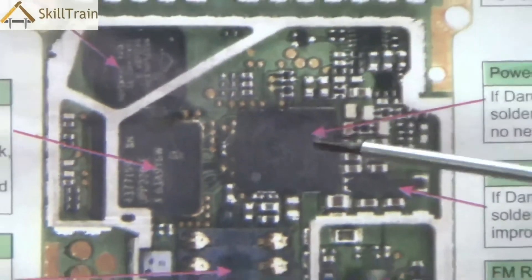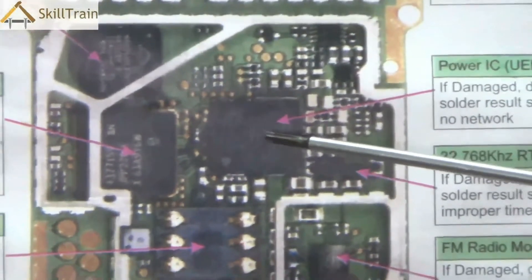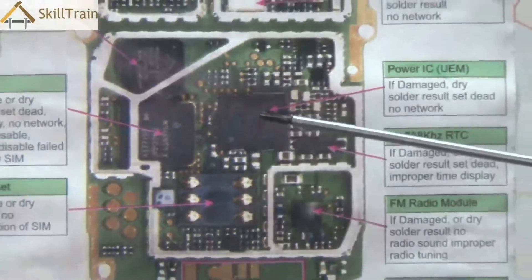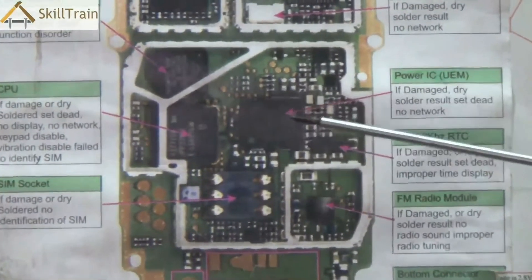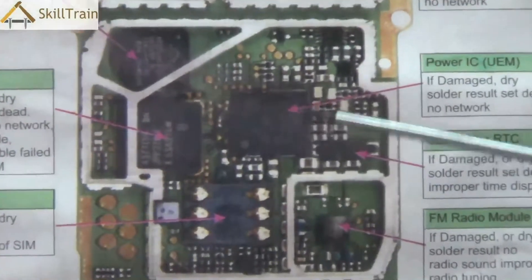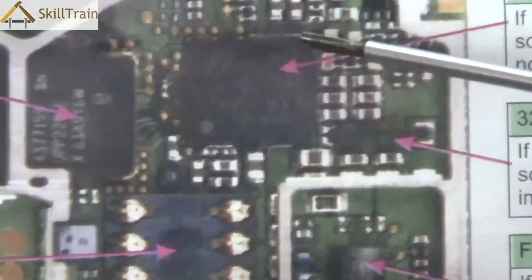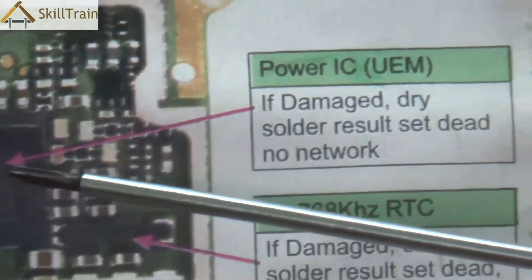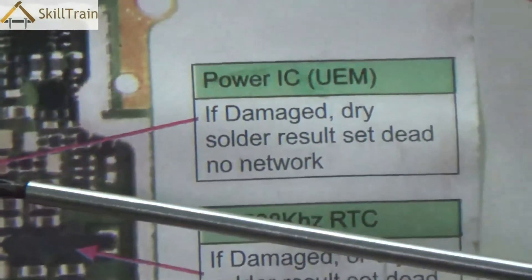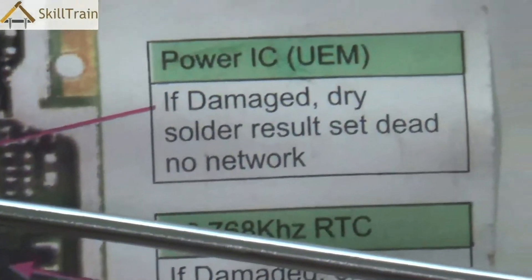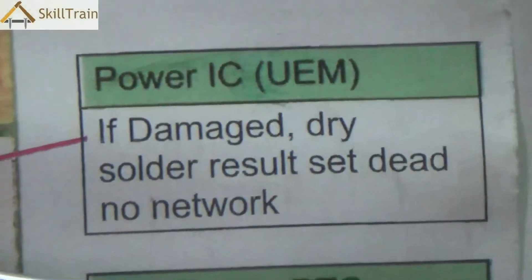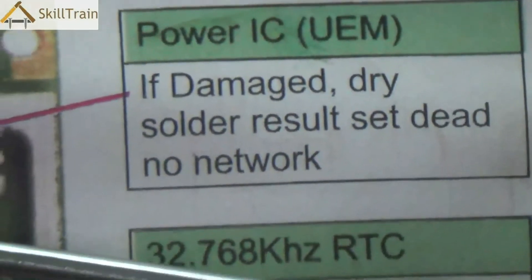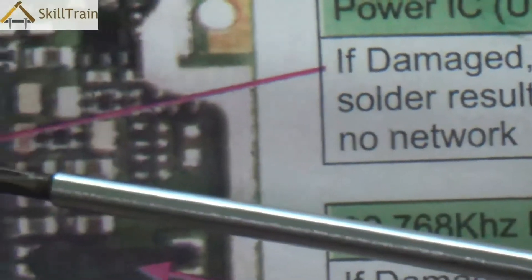Let's now go underneath and understand what the components are here. The first one is called the power IC. The power IC regulates the power supply to the entire board. Whenever the power IC is damaged you will have a problem with the mobile phone — the set could be completely dead or the network may not be available, because the power IC supplies and regulates the power to different components.